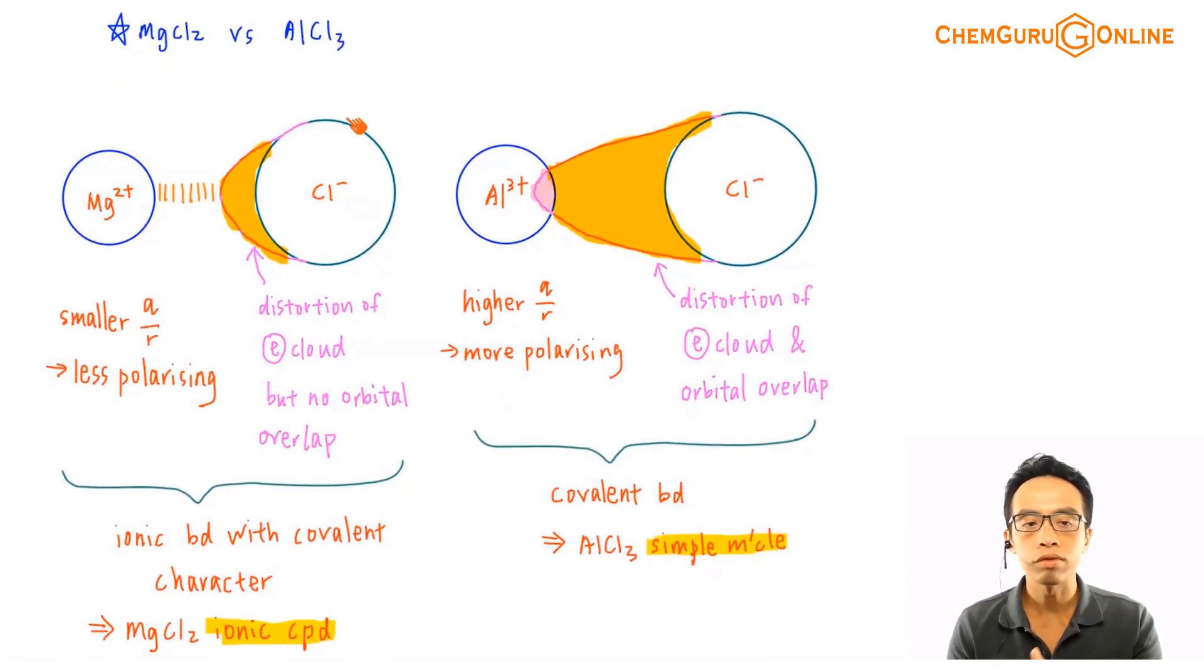Now if I compare this with MgCl2 and AlCl3, I think both of these are in the notes. The difference between these two is Mg2+ has high charge density, polarizing, you can pull electron cloud of Cl- towards itself, but these two guys are still discrete ions. That means there's no overlap of orbital. Mg2+ and Cl- are still separate.